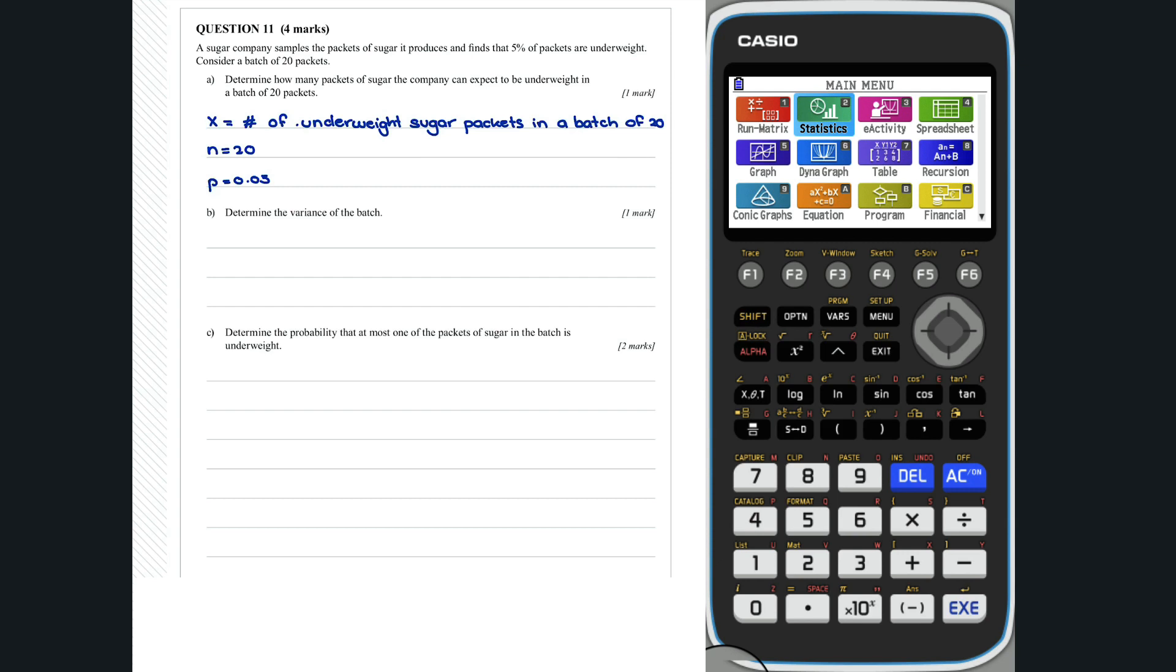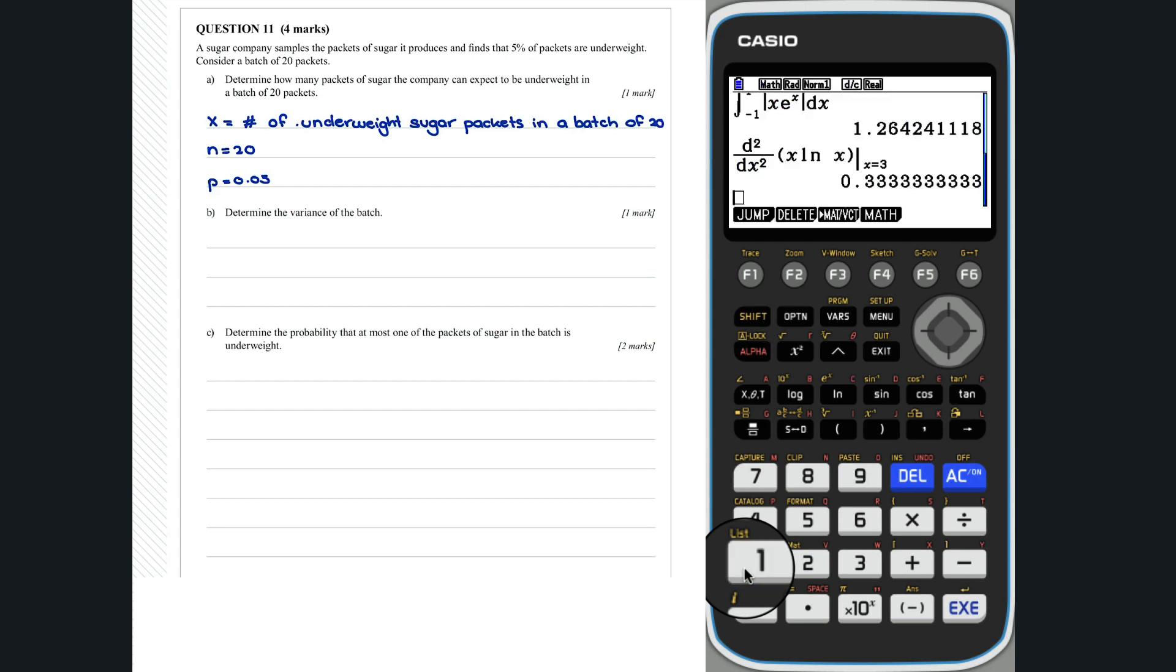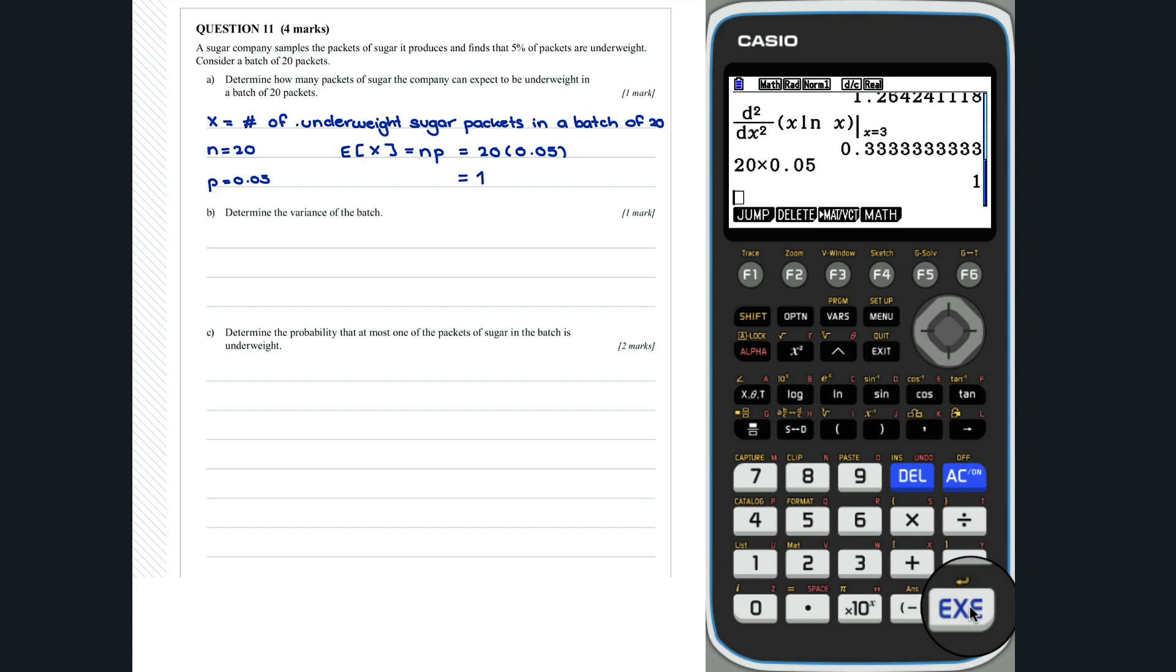We need to calculate the expected number of underweight packets in a batch of 20, i.e. the expected value of x. So the expected number of underweight packets in a batch of 20 is 1.